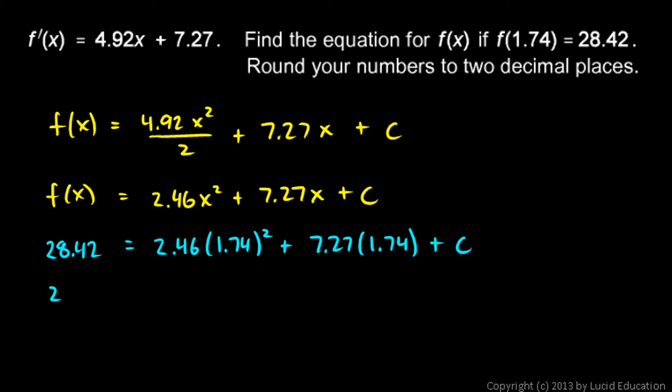And let's work this out. 28.42. If I do the math here, multiply all that out, you can pull out a calculator and put all of that in. 2.46 times 1.74 squared plus 7.27 times 1.74. That all comes out to 20.10, and then we still have the plus c.